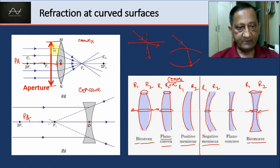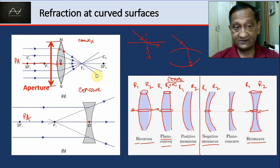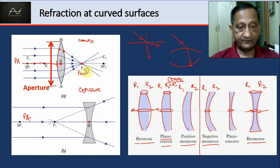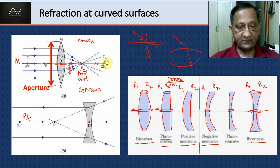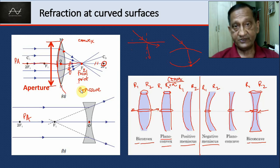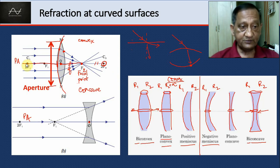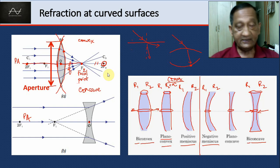Suppose a parallel beam of light falls on this convex lens. There is a refraction at each surface and all the rays go through two refractions. Finally they all converge at a point called the focus or focal point. This distance is the focal length, and I'm calling this point f2, while this point is 2f2. Note that this point 2f is not necessarily the center of curvature of the surface — unlike in a mirror where f equals r over 2.